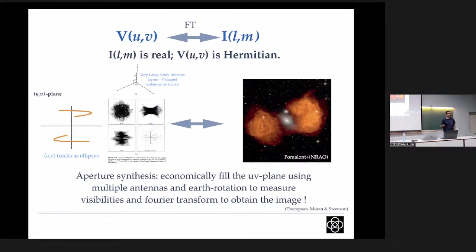Once we have collected this data, we make a Fourier transformation and get an image just as real as what you'd get with optical means or a mobile camera. For example, this is a radio image of an AGN at the center. In the dark area is the optical image showing the galaxy - which has a black hole. Because it's an active galaxy, it has ejected a huge amount of plasma into the outer regions. You can see it extends much further than the galaxy itself. It is shown in red as false color, but it's real - measured at 1.4 GHz with certain brightness and intensity distribution.